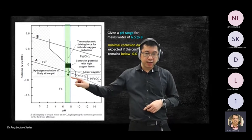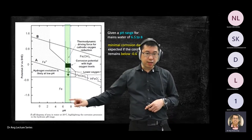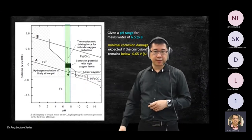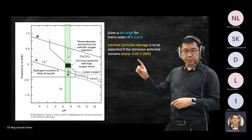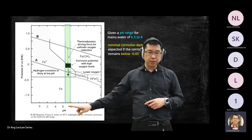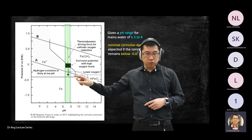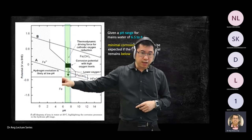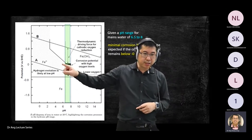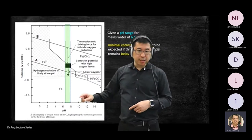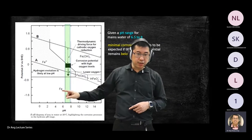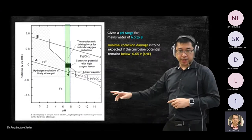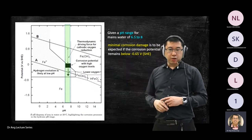Below this straight line the iron is quite stable — corrosion happens but is minimal. Above this line you see Fe²⁺, which is an unstable region. Below the line there is no charge — it is a more stable region, but it can still trigger corrosion, just at a minimum level.